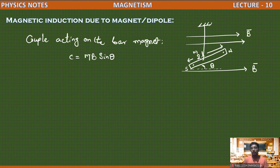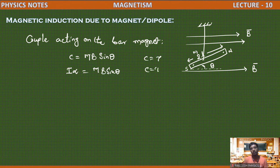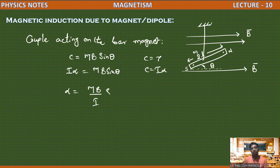This couple produces torque in this bar magnet, which is equal to I alpha. So I alpha equals MB sine theta, where I is the moment of inertia of the bar magnet and alpha is the angular acceleration of this magnet. Therefore alpha equals (MB/I) times sine theta.